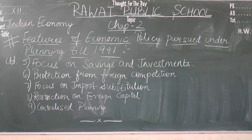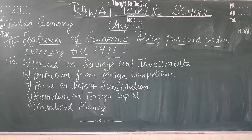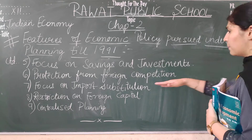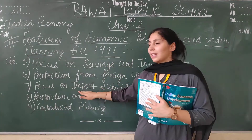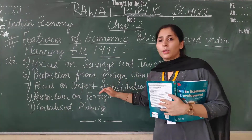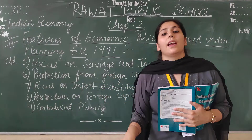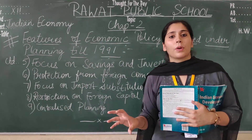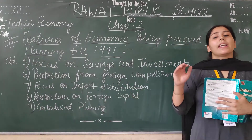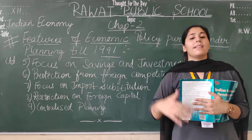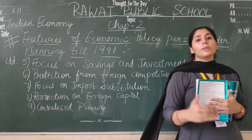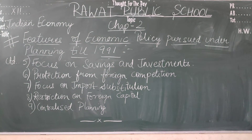High import duties were imposed and quantity restrictions were placed on the products and goods that could be imported from outside. The next feature is focus on import substitution. Import substitution meant that since we were not in favor of foreign competition and did not want foreign goods to hurt domestic industry, the economy decided to become self-sufficient — to manufacture and produce products domestically so that we don't need to import from outside. The basic idea was to save foreign exchange and become self-sufficient.